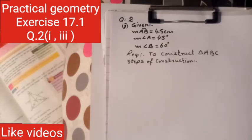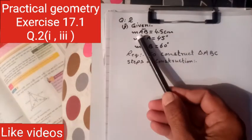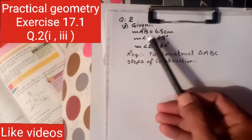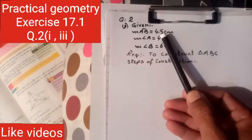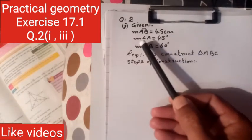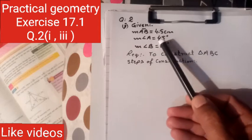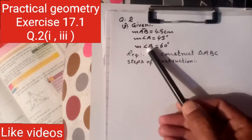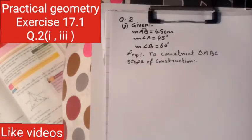Question number 2k part 1. Construct triangle ABC with the following given information: AB side is 4.5 cm, angle A is 45 degrees, angle B is 60 degrees.